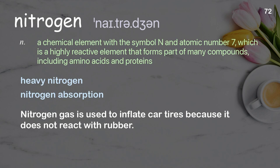Nitrogen: part of many compounds including amino acids and proteins. Examples: heavy nitrogen, nitrogen absorption. Nitrogen gas is used to inflate car tires because it does not react with rubber.